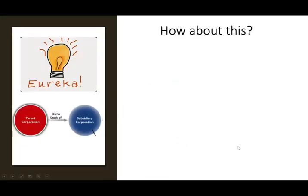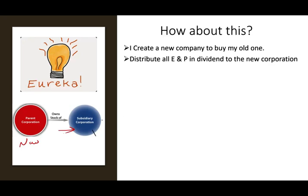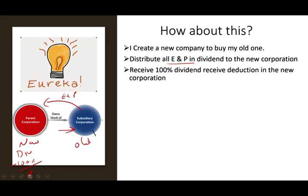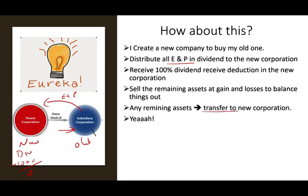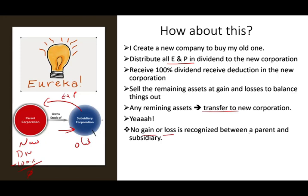Homer thinks of yet another approach — creating a new company to buy his old company. He distributes all earnings and profit as dividends to the parent corporation. The parent receives the dividend and subtracts 100% of it as a dividends received deduction, paying no taxes. Then they sell remaining assets or transfer them. But no gain or loss is recognized between a parent and a subsidiary — the two companies merged, so in substance it's the same company. Therefore, you cannot use that tactic.